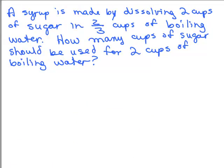Here's another problem. A syrup is made by dissolving 2 cups of sugar in 2 thirds cups of boiling water. How many cups of sugar should be used for 2 cups of boiling water? We need to decide what things we're talking about here. We're talking about sugar and boiling water.